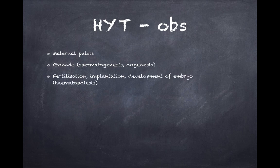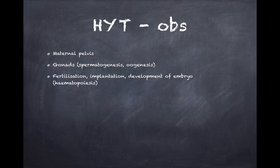Next is fertilization, implantation, and development of the embryo. You need to know how exactly fertilization occurs, where it occurs, how implantation takes place, how it appears on ultrasound, and the different stages of embryo development. Focus especially on hematopoiesis — the embryonic period, and which organ is responsible for hematopoiesis at each time point. That is very important.